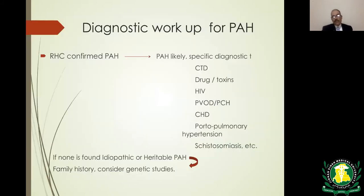If the VQ scan is normal, chronic thromboembolic pulmonary hypertension is ruled out. The next step is to evaluate for primary pulmonary hypertension or connective tissue disease-related PAH, which requires right heart catheterization to confirm the presence of pulmonary hypertension, assess its severity, and confirm it is not related to left heart failure — that is, pulmonary capillary wedge pressure is less than 15.